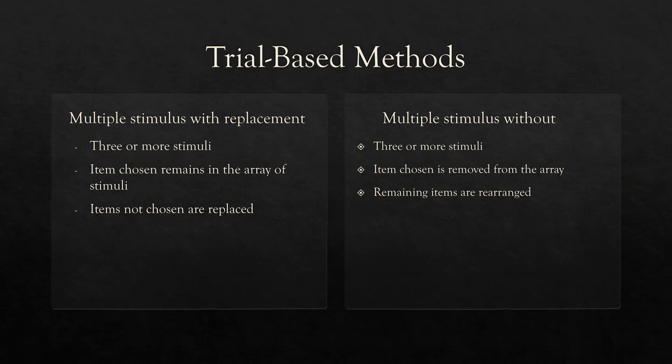Multiple stimulus with and without replacement is probably the most misunderstood — just think about the wording. Multiple stimulus means three or more stimuli (single = one, paired = two, multiple = three or more). With replacement: whatever is chosen, you put it back in the array and replace the items that weren't chosen. So if I have five items and item C is chosen, I put item C back and replace the other four. Without replacement is the opposite: the item chosen is removed from the array. If I have five items and item C is chosen, I take item C out and we have four items left. Multiple stimulus with replacement — we replace the things not chosen; multiple stimulus without replacement — we remove the one that was chosen.